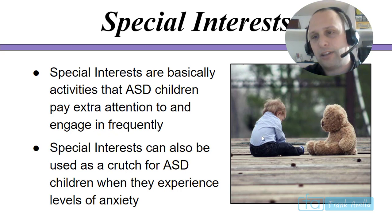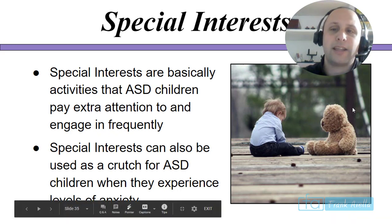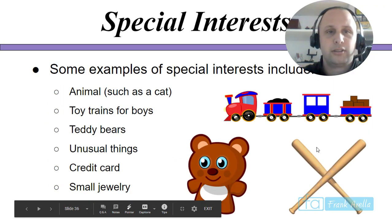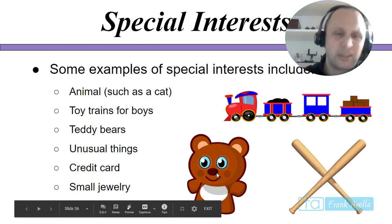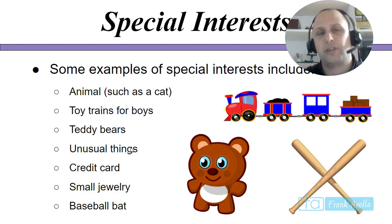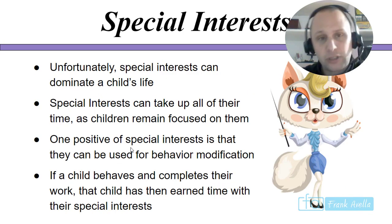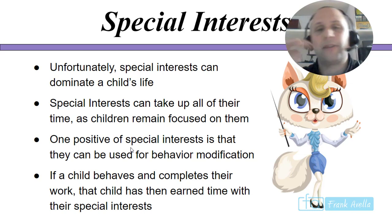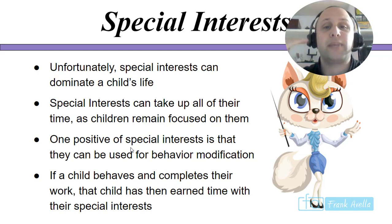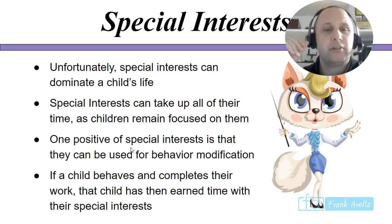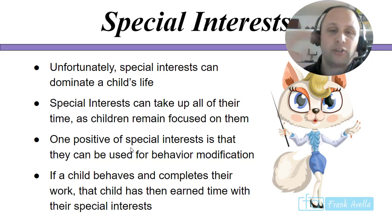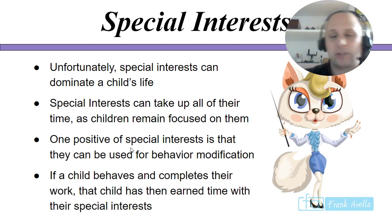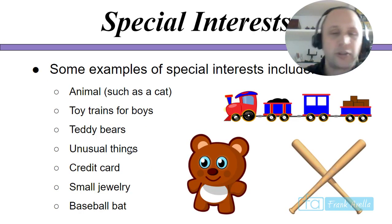You can see in the picture a child with autism spectrum disorder with their little teddy bear, which is comforting. Special interests can include anything — jewelry, credit cards, teddy bears, toy trains, animals, baseball bats. They can dominate the child's life and take up all of their time. However, one positive of special interests is that they can be used for behavior modification — if a child behaves and completes their work, they earn time with their special interests.